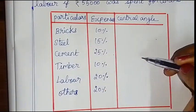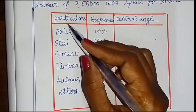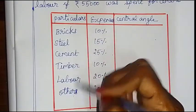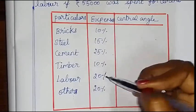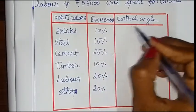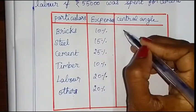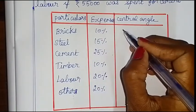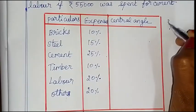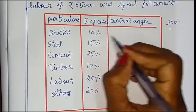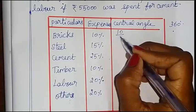In the first column, we can see the details. In the second column, you can see the percentage. Now, how much is the central angle? If you have a percentage, you can see the central angle — the full angle of 360 degrees. This section will be 80%.